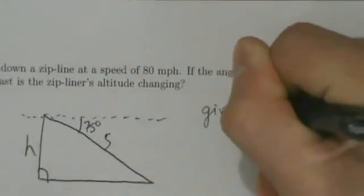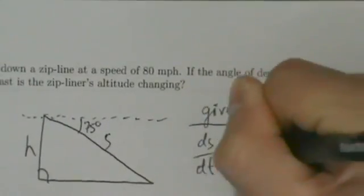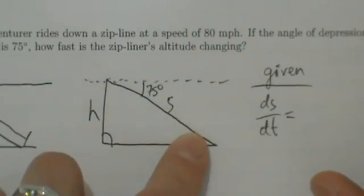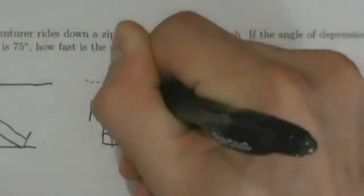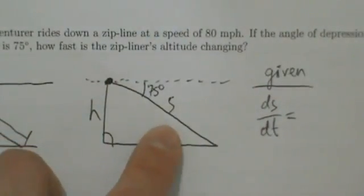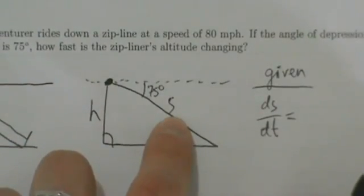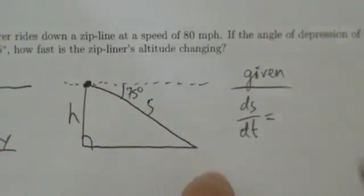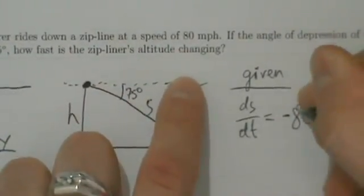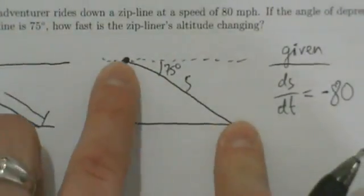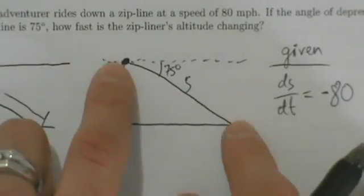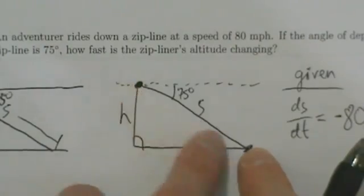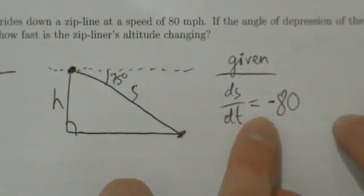We're given ds/dt equals — why is it ds/dt? Because s represents this zipline here, the length of that zipline from the ground to the adventurer. As the adventurer rides down, this distance s is changing. The rate of change of s with respect to time is how fast the adventurer is riding down the zipline. It's going to be negative — actually negative 80. Why is it negative? Because as the adventurer rides down the zipline, s is going to decrease. S is the distance between the ground and the adventurer, and as the adventurer rides down, this distance decreases. So ds/dt is negative 80 miles per hour.